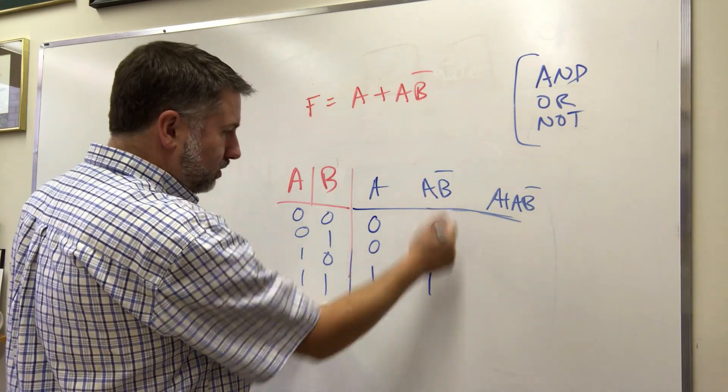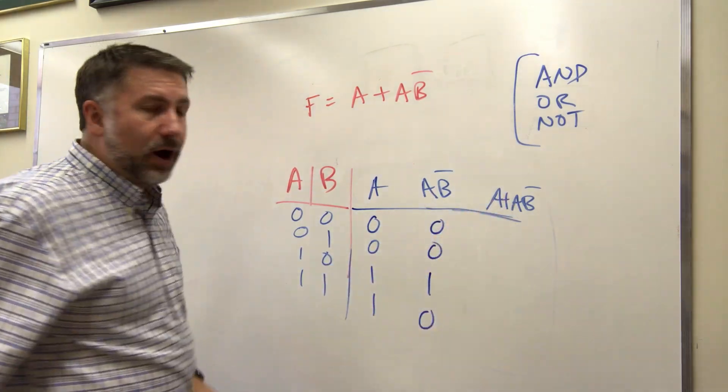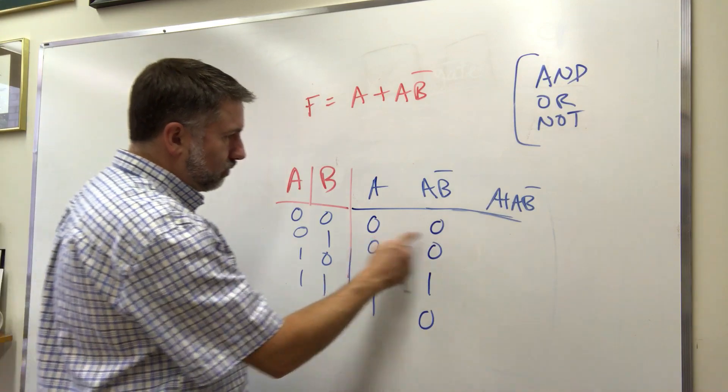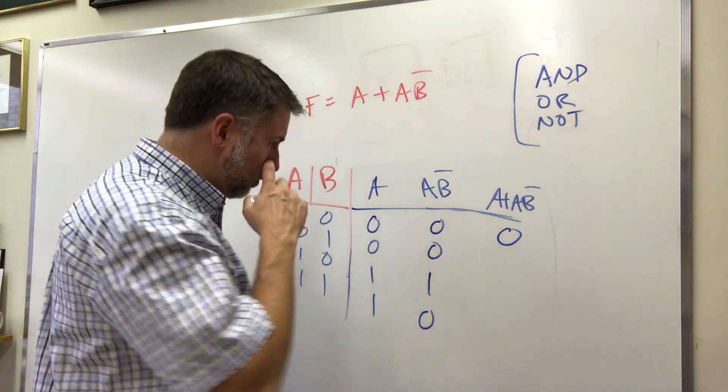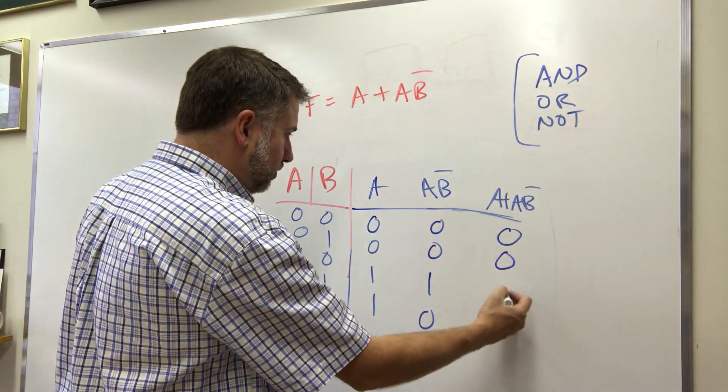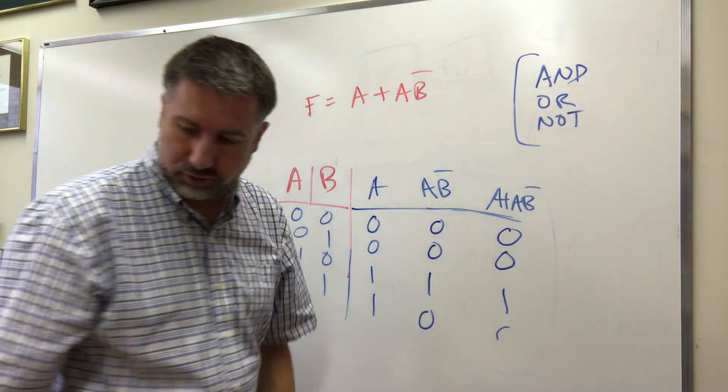If A is one and B is zero, B prime becomes one that's a one. And if A is one and B is one, B is inverted to zero that's a zero. So if we or those together, zero or zero, or is true if any of the inputs is true so this is false, this is true, and this is false. This is true and this is true.